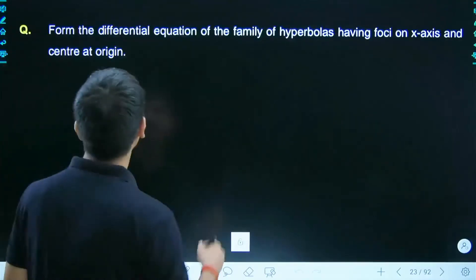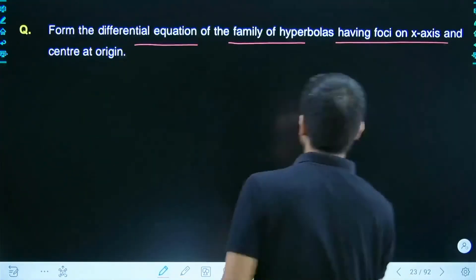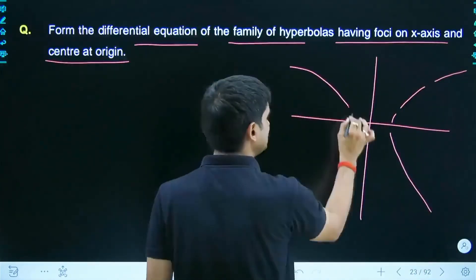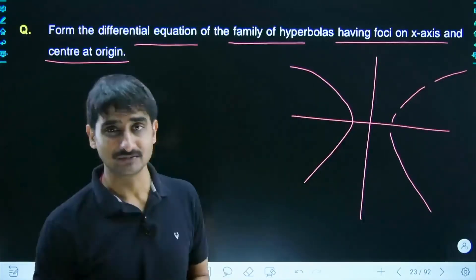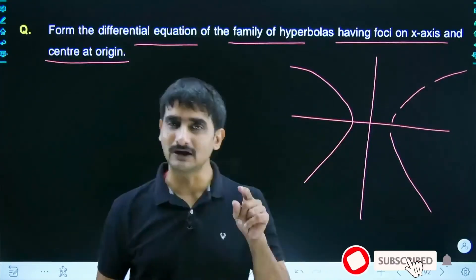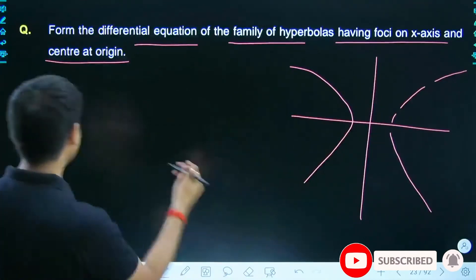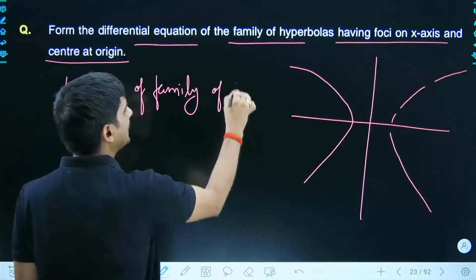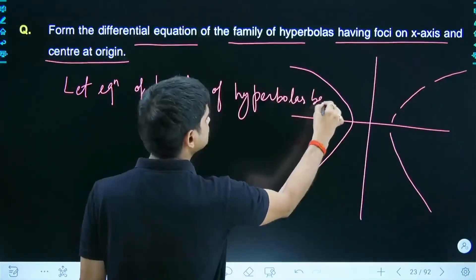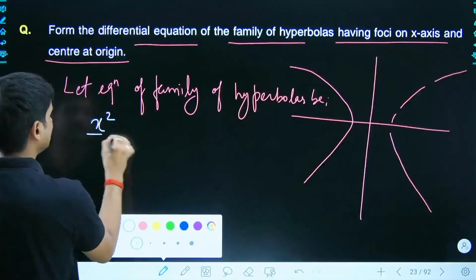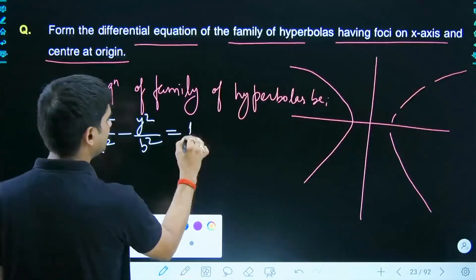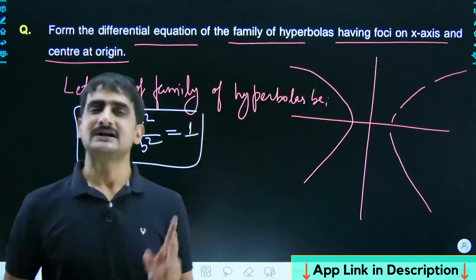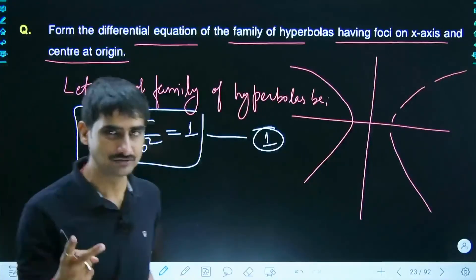Next question: form the differential equation for the family of hyperbolas having foci on the x-axis and center at origin. The standard equation is x²/a² − y²/b² = 1. This equation has two unknown constants, a and b. Therefore we must differentiate it exactly two times.